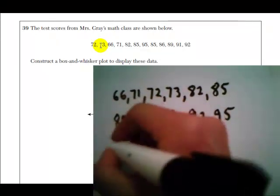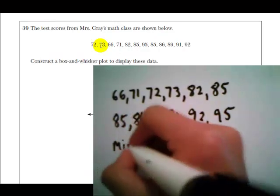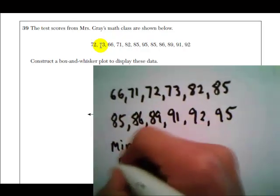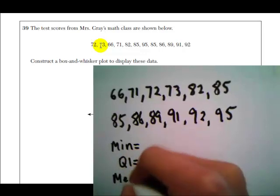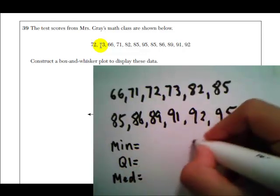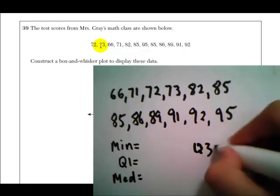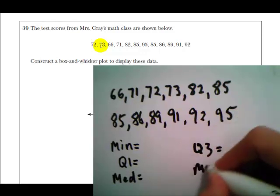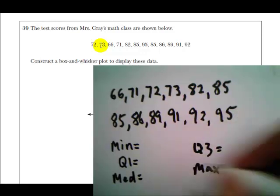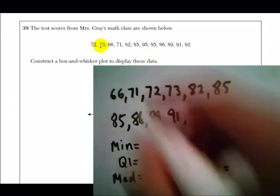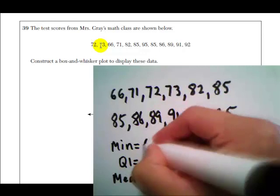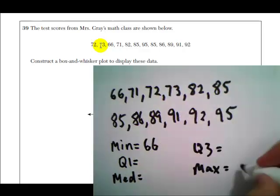Now, the numbers that we need are the minimum, the first quartile, we'll call that Q1, the median, the third quartile, we'll call that Q3, and the maximum. Now the minimum and the maximum are easy. Those are the smallest and largest numbers. The minimum is 66. Maximum is 95.